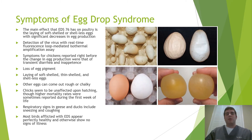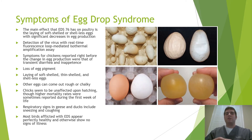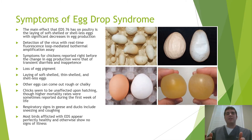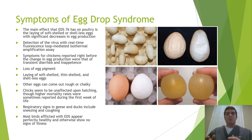Most people don't notice any issue with their birds until they see a loss of egg pigmentation, and that quickly moved to the laying of soft, thin, and shell-less eggs. Some eggs are also known to come out rough or chalky. While the chicks developing inside the deformed eggs aren't necessarily more likely to die within them, in some instances after hatching, poultry producers recorded that these chicks experienced a higher mortality rate within the first week of life.